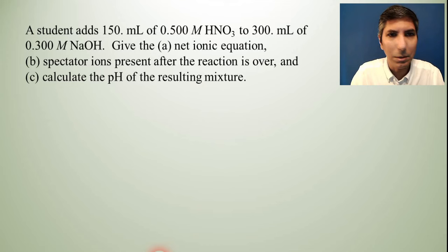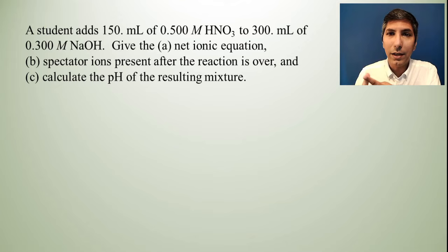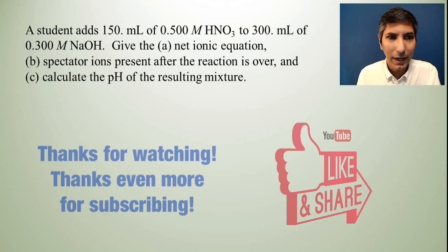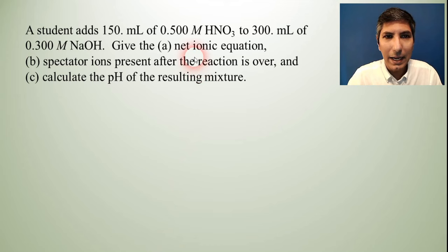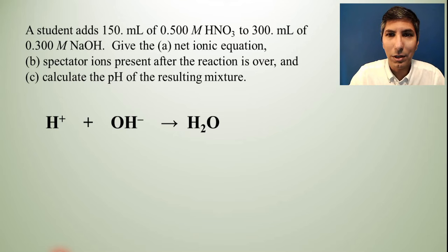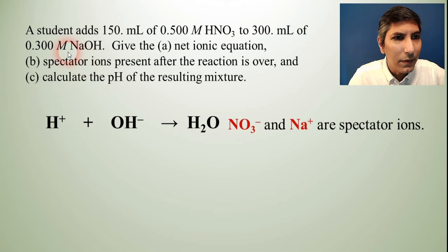So let's try an example with this. A student adds 150 milliliters of 0.500 molar nitric acid to 300 milliliters of 0.300 molar sodium hydroxide. It asks us to give the net ionic equation, the spectator ions present after the reaction is over, and to calculate the pH of the resulting mixture. So for part A, the net ionic equation, well, we just have to recognize that there's a strong acid being mixed with a strong base, which means the net ionic equation has to be this right here. H+ plus OH- equals or yields water. And the spectator ions would be all the other ions that are there that aren't part of that net ionic equation. So that would be sodium and the nitrate. Those are your spectator ions.